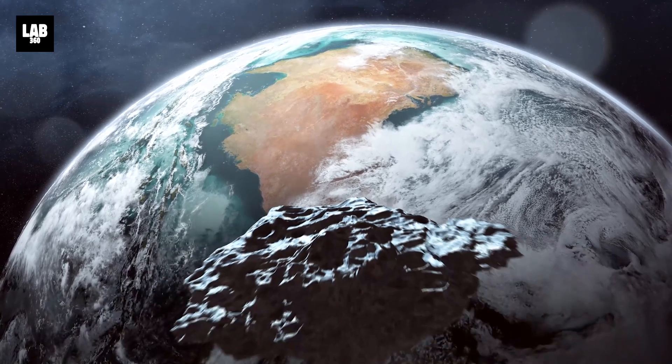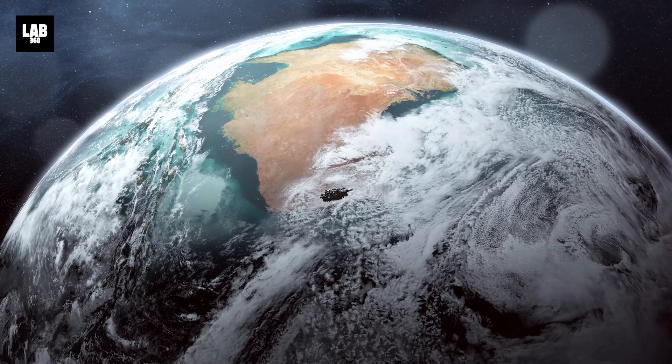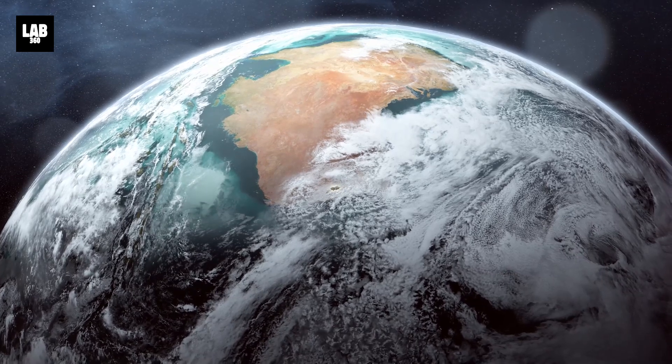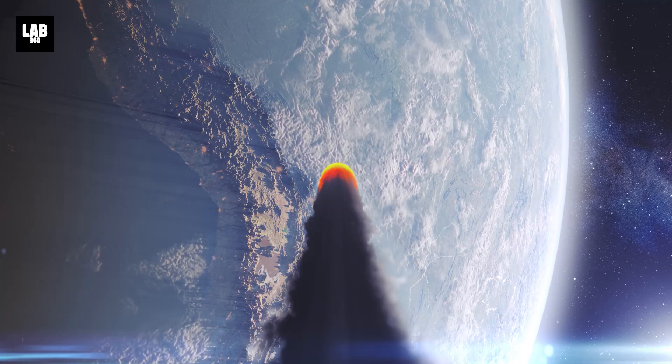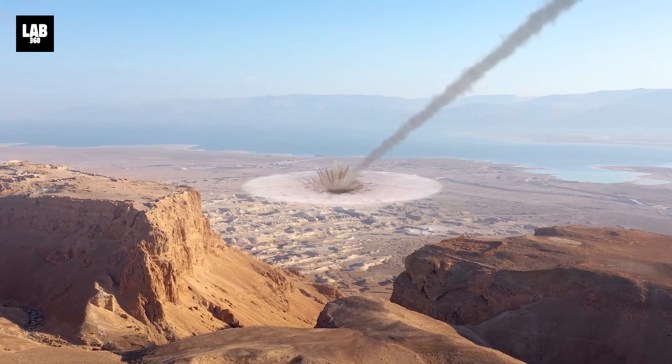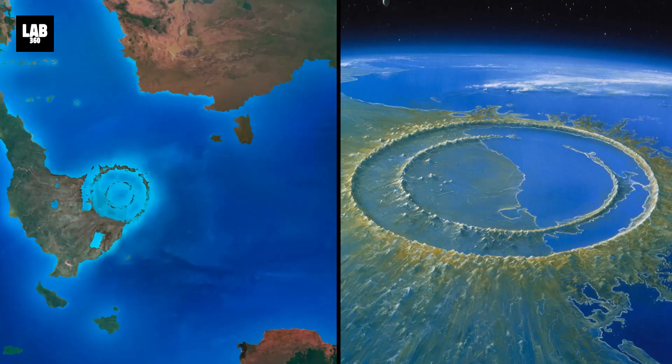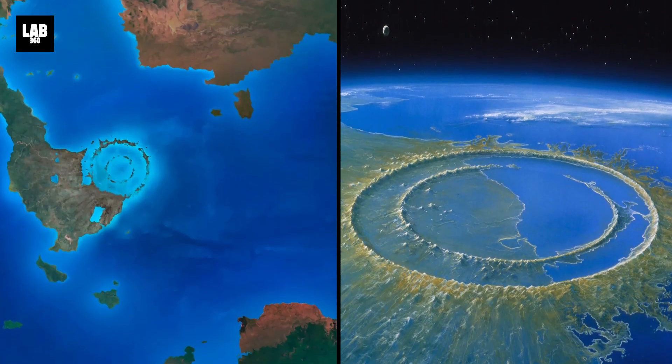Imagine a world where an asteroid the size of a small city hurtles through space, destined for a cataclysmic rendezvous with Earth. 66 million years ago, such a cosmic behemoth, the Chicxulub impactor, ushered in the end of the dinosaurs, leaving behind a crater 180 kilometers wide and 20 kilometers deep on the Yucatan Peninsula.